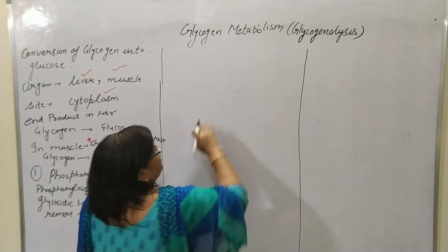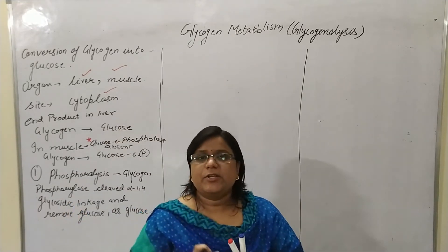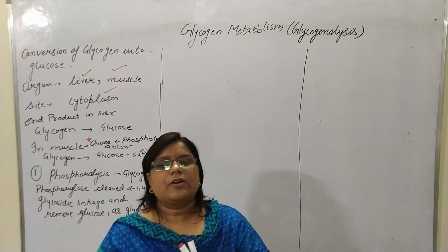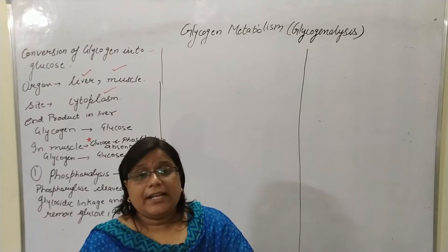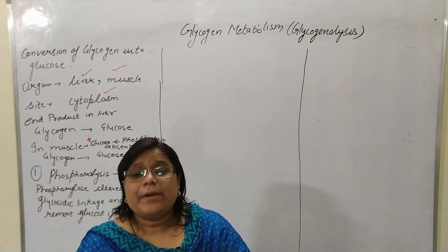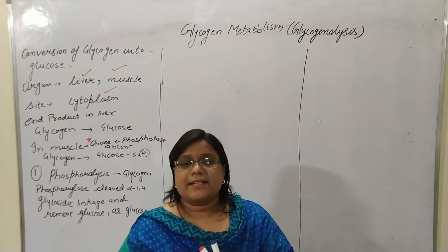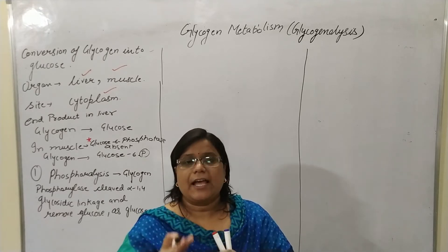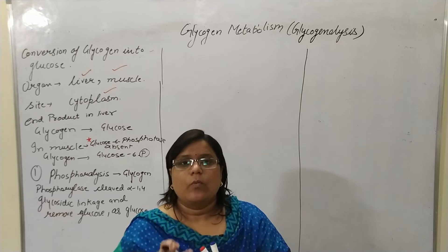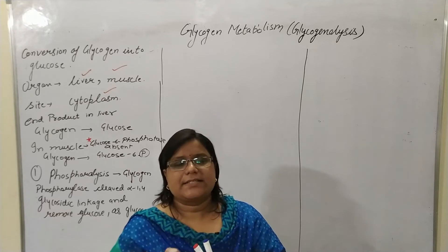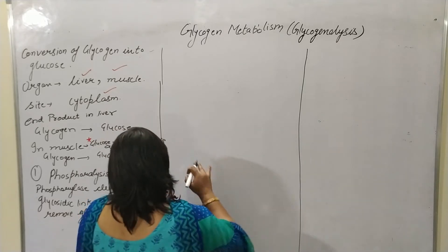Glycogen phosphorylase continuously removes glucose as glucose-1-phosphate until the limit dextrin is formed. Once the limit dextrin forms, the action of glycogen phosphorylase stops. I will now show what the limit dextrin is in the key diagram.